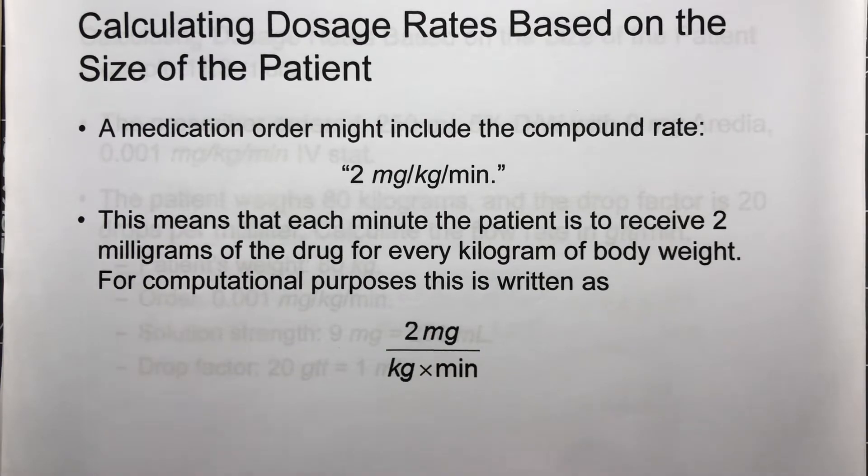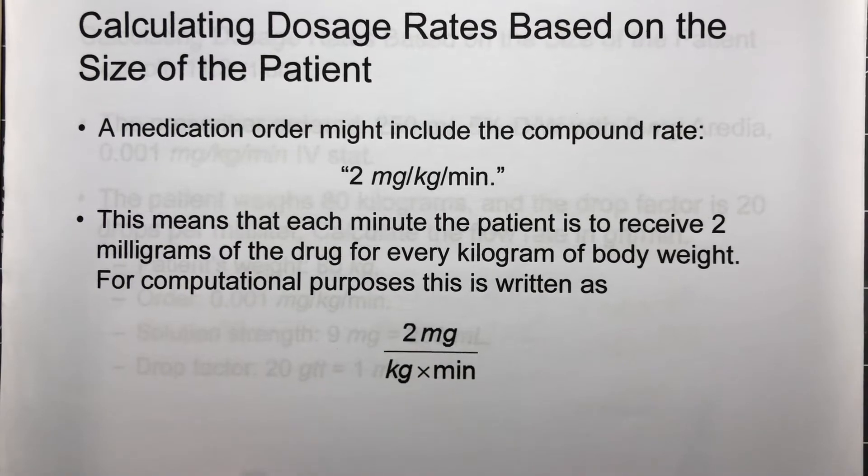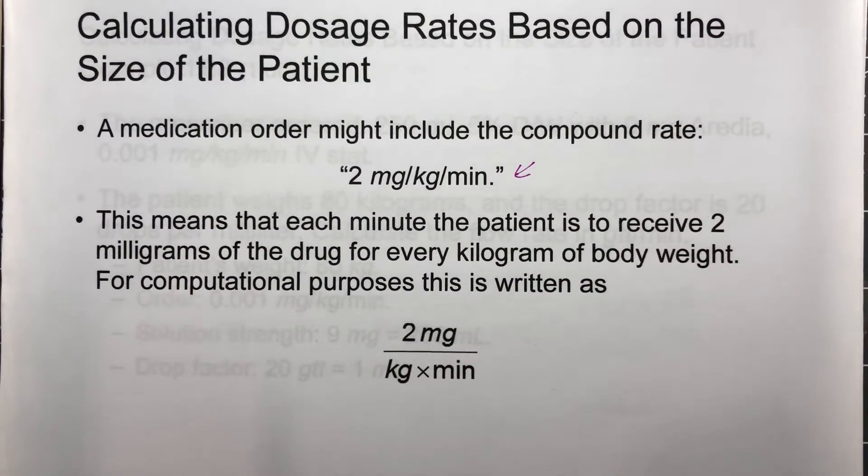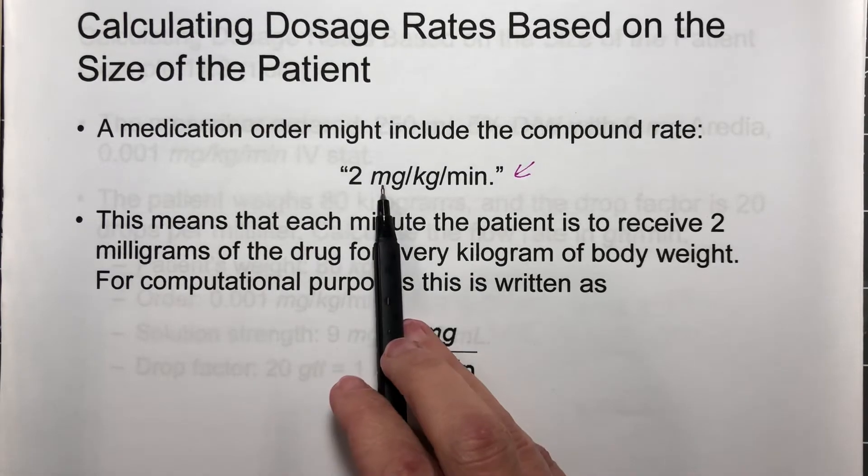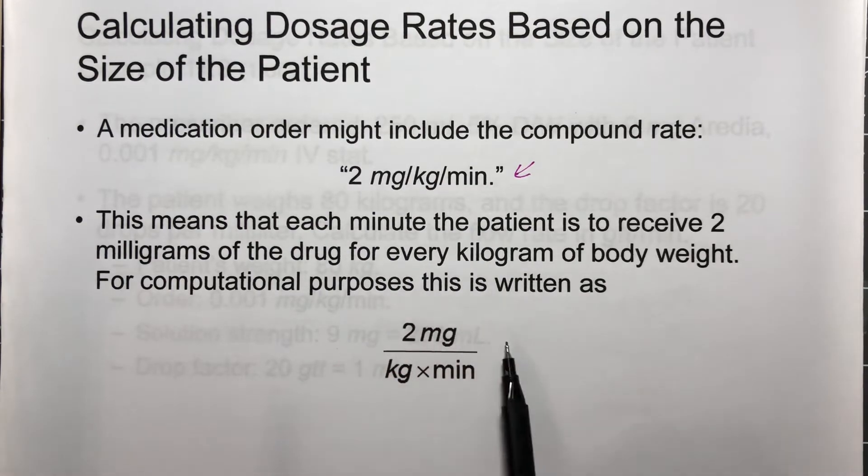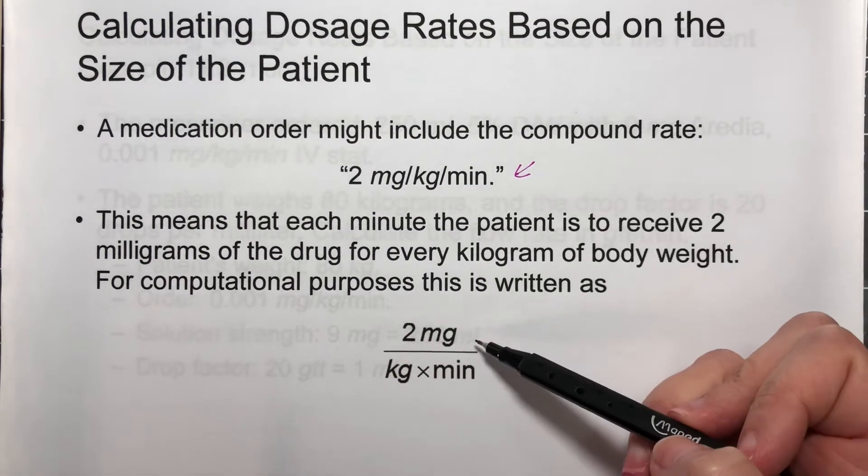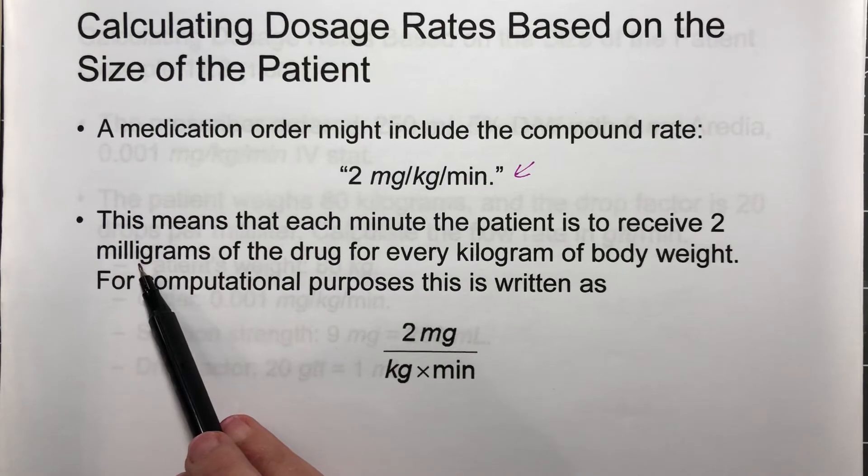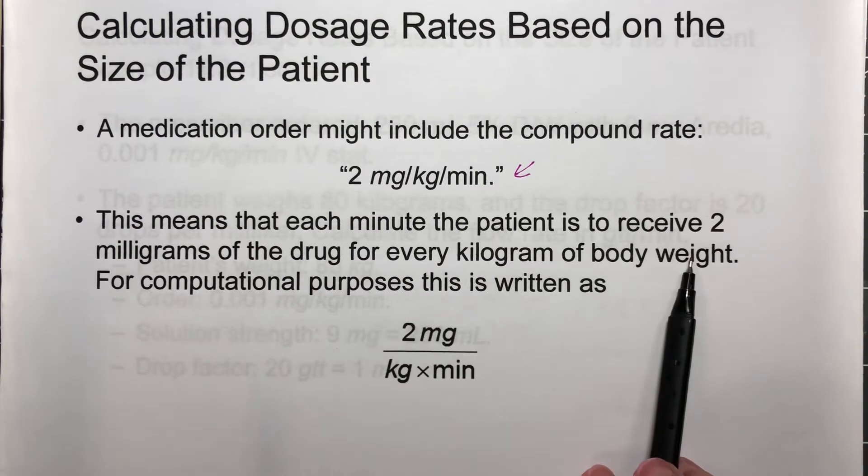Calculating the dosage rates based on the size of a patient. A medication order might include the compound rate 2 milligrams per kilogram per minute. What it means is this: milligrams goes on the top, and kilograms times minutes goes in the bottom. This means that we're supposed to receive 2 milligrams of the drug for every kilogram of the body weight, and it's supposed to be given that much in a minute.